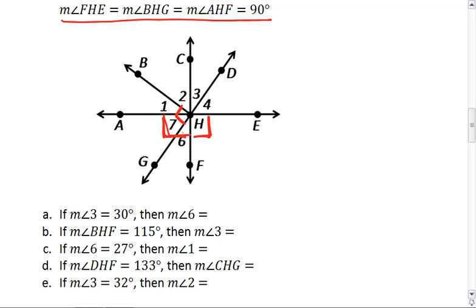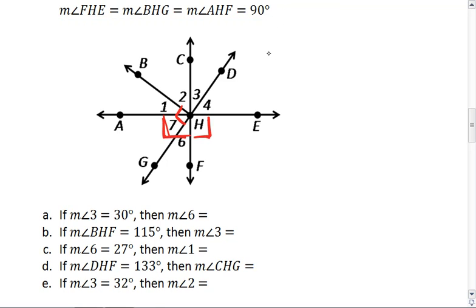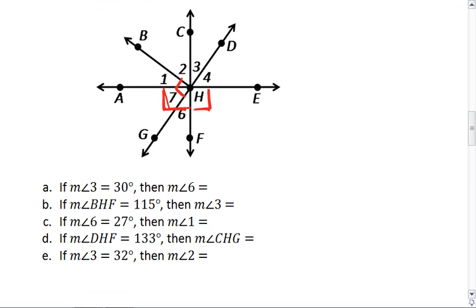So this will be important. Let's answer our questions. Because these all use 'if,' it means each problem is its own. We basically need to erase the screen after we finish A in order to start problem B. But for all five problems, these right angles are true.